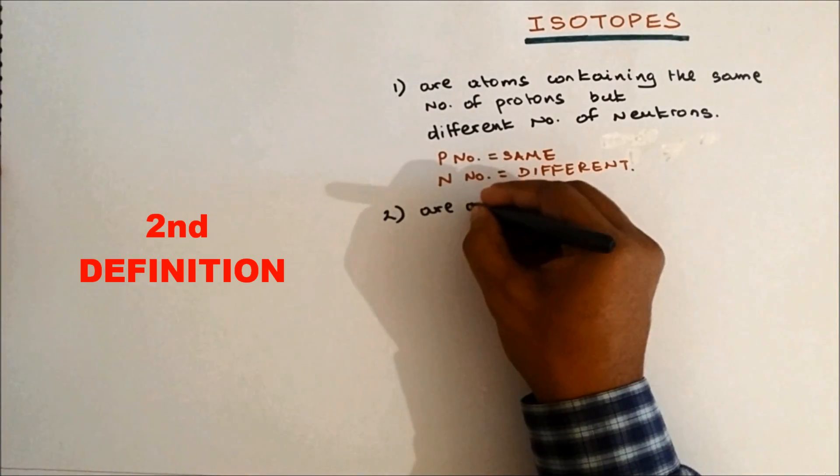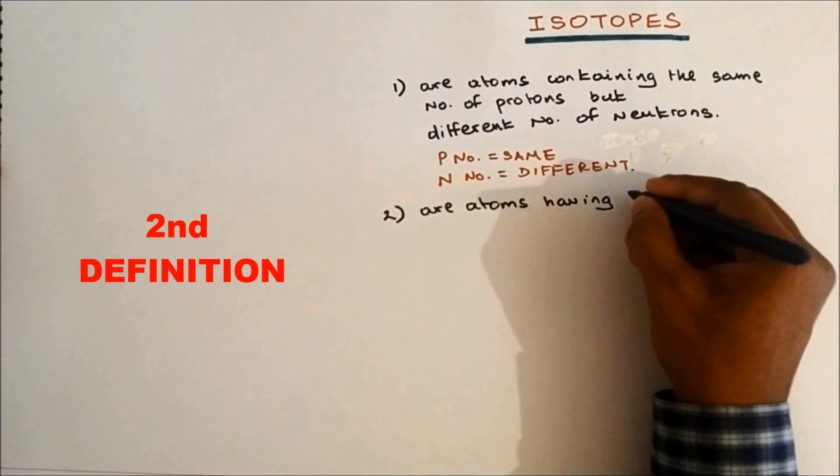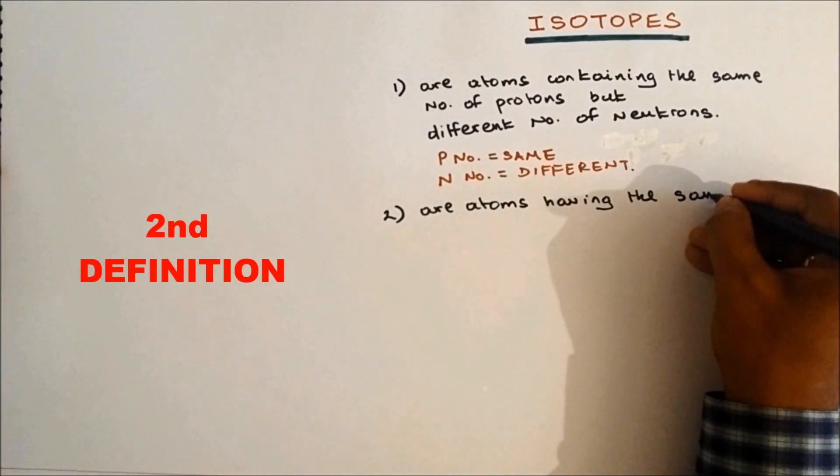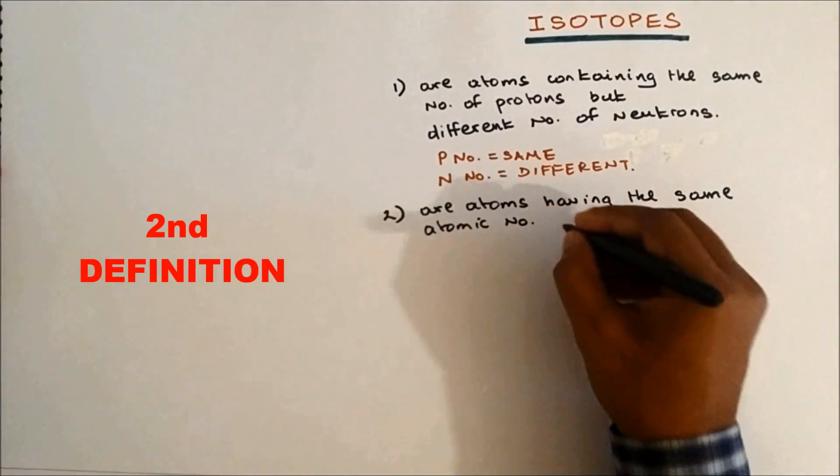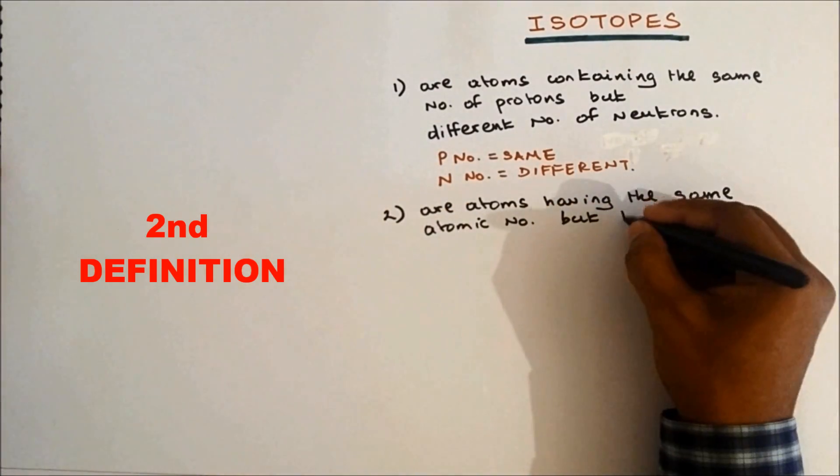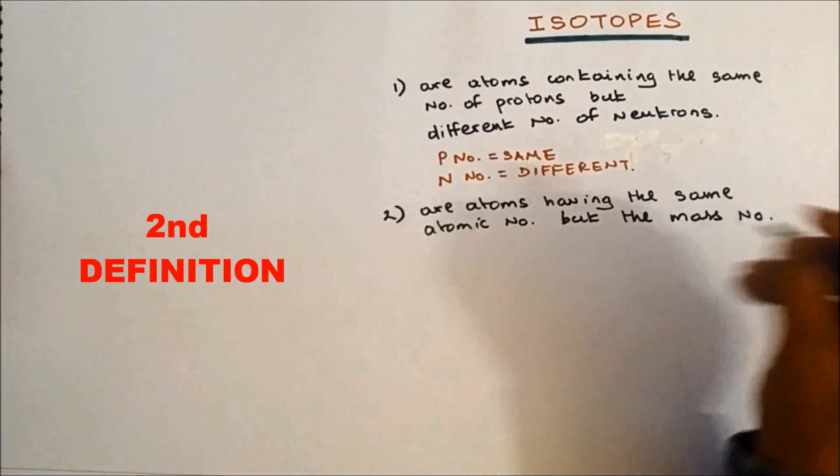Definition number two: isotopes are atoms having the same atomic number but the mass number is different.